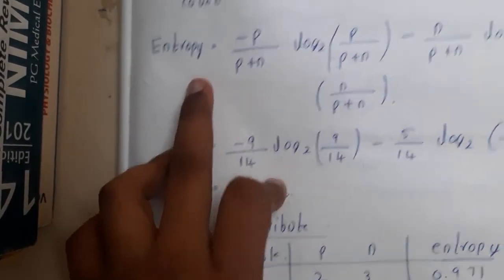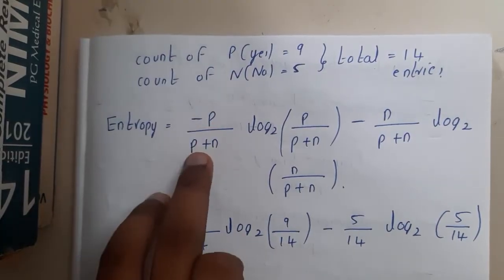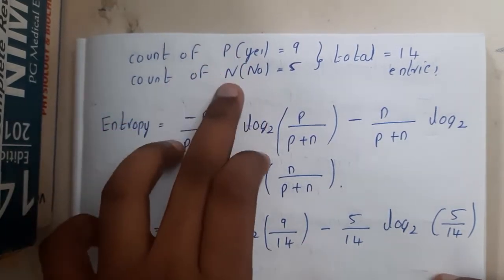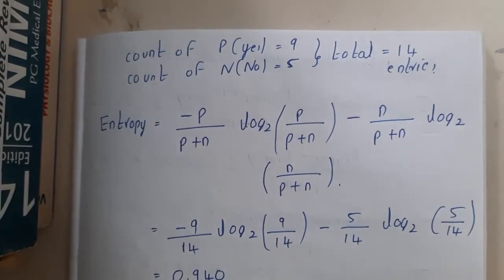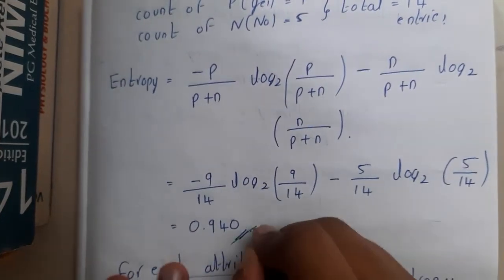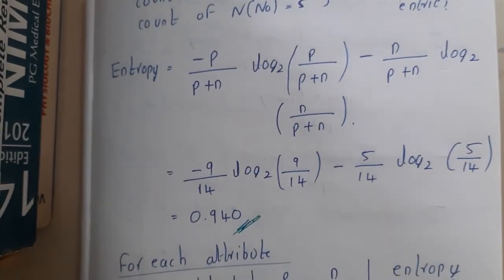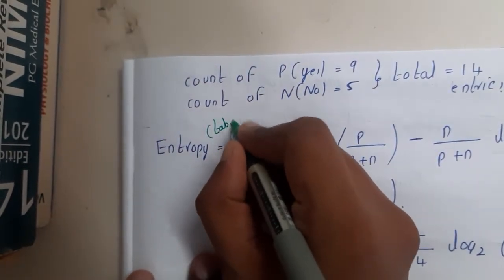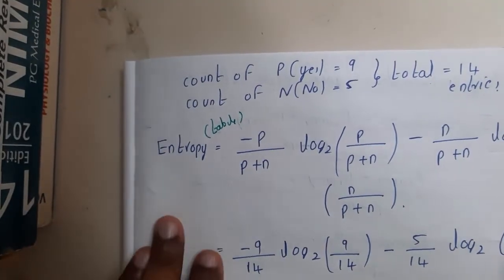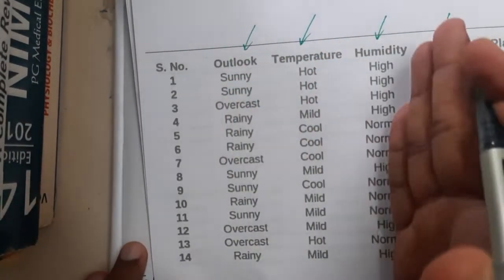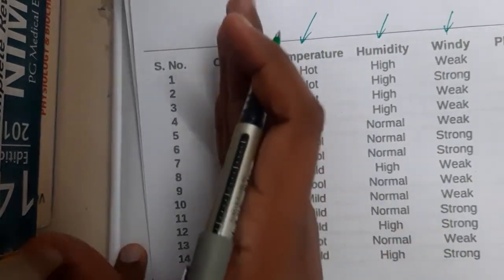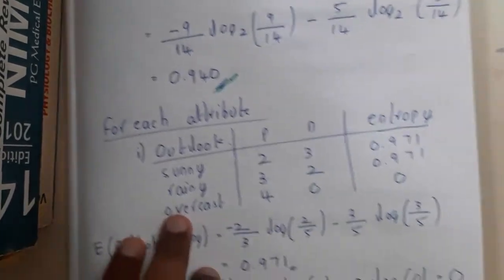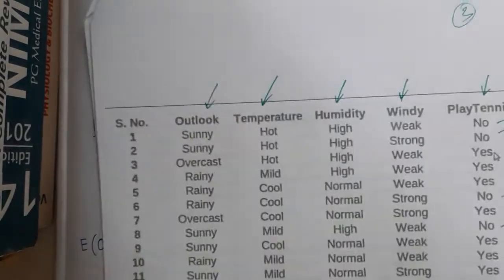The first formula we use is entropy. Entropy = −(P/(P+N)) × log₂(P/(P+N)) − ... where P is yes (positive) and N is no (negative). After substituting the values, we get an entropy of 0.940 for the whole table. Once we have the entropy of the whole table, we start calculating for each attribute — outlook, temperature, humidity, and wind.